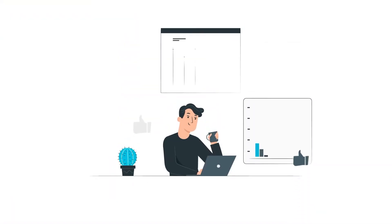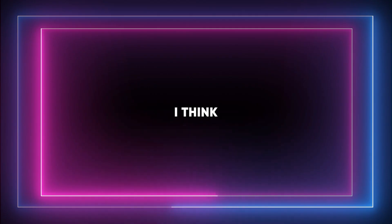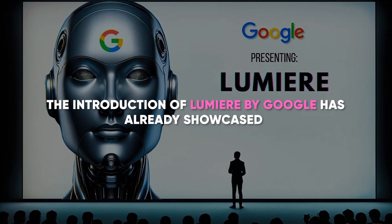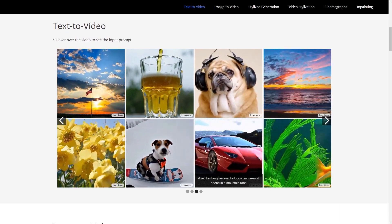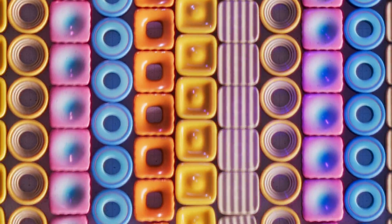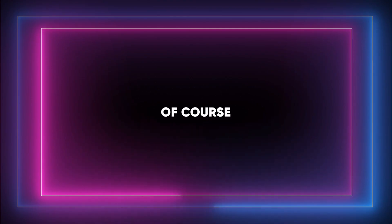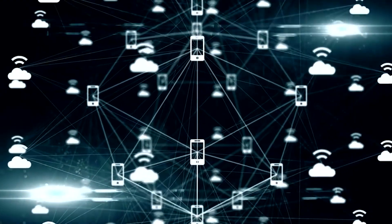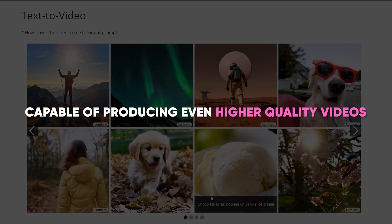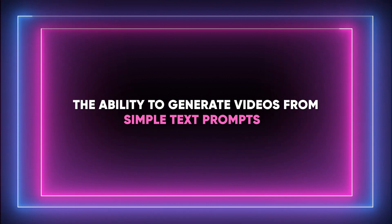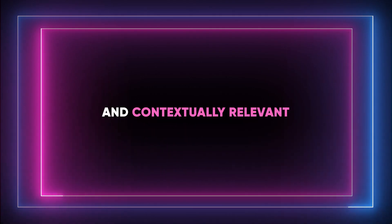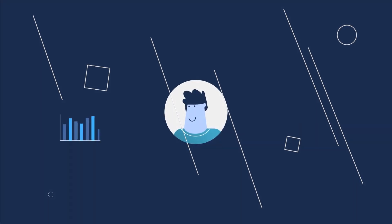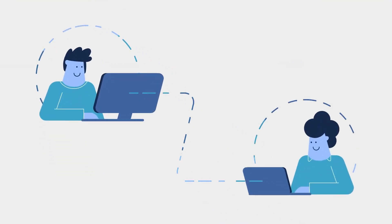Whether you're looking to add a touch of style to your personal videos or create professional-grade visuals for your organization, Lumia is the perfect solution so far. The introduction of Lumia by Google has already showcased the potential for generating videos from text prompts, leveraging the power of diffusion models to create realistic, coherent motion. As we look ahead, the evolution of these AI innovations is expected to push the boundaries of video generation even further. The continuous improvement in AI technologies will likely lead to more sophisticated diffusion models, capable of producing even higher-quality videos with greater efficiency. The ability to generate videos from simple text prompts will become more refined, allowing for the creation of content that isn't only visually appealing, but also deeply personalized and contextually relevant. Moreover, as Lumia and similar platforms evolve, they'll incorporate more advanced features for customization and creativity, enabling users to craft videos in specific styles or according to particular themes with unprecedented ease.